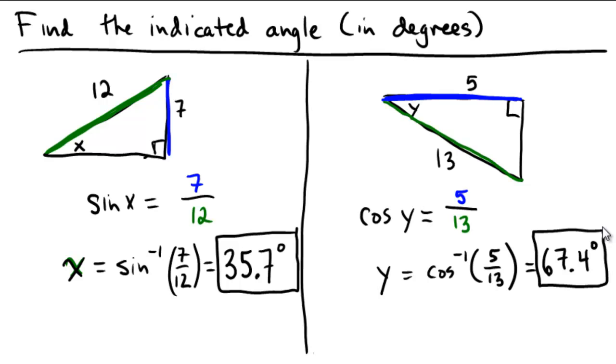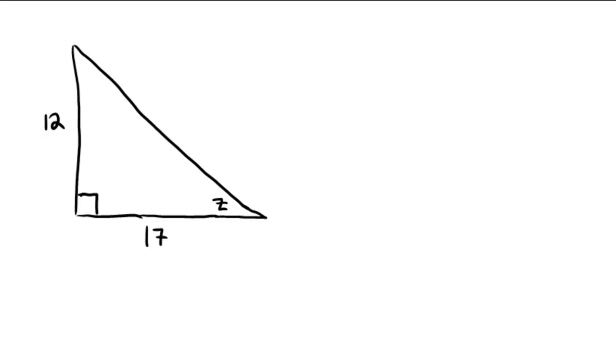Great! Now, why don't you pause the video and see if you can do one on your own. Try this triangle here, in which the opposite leg and the adjacent leg are labeled. So assuming you paused and tried it out here, we have an opposite leg of 12, we have an adjacent leg of 17, and so the ratio we are going to use is going to be the tangent ratio.